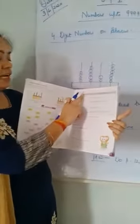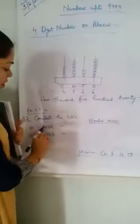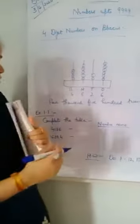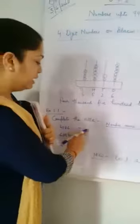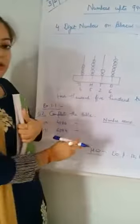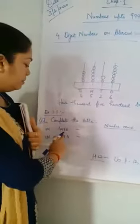Now come to question number two: complete the table. Complete the table. You have to write the number name.